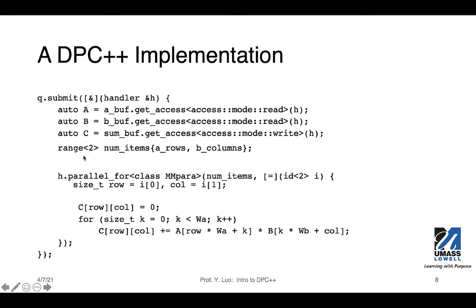For matrix C, the accessor will be a write access, because we will be writing data to this buffer. Then we have range bracket 2. Range is an abstraction in SYCL language to declare multiple dimensions, and we can specify the size of each dimension. The num_items variable is a range variable declared with two dimensions, so we expect two numbers in its definition. The first number is the size of the first dimension, and the second number is the size of the second dimension. By size, we mean the maximum value in that dimension. So the first dimension will go from 0, 1, all the way up to A_rows minus 1. Likewise, the second dimension values will be from 0, 1, all the way to B_columns minus 1.